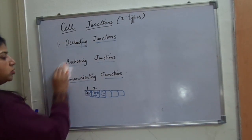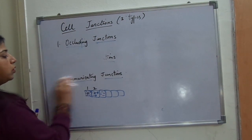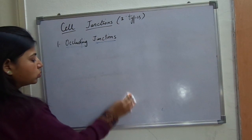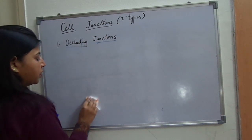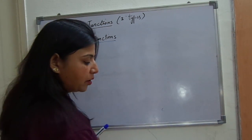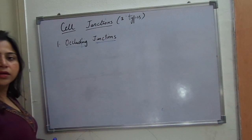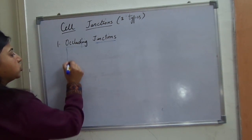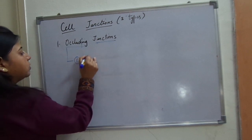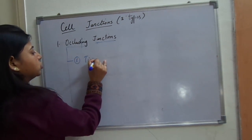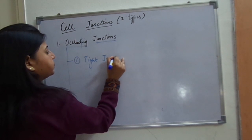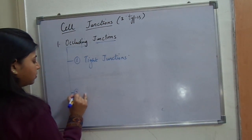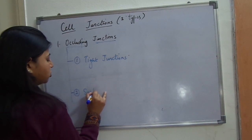Now I will talk about occluding junctions in detail. In occluding junctions, the connection between two cells is stopped up; two cells are not connected to each other. Two types of occluding junctions are there: first one is known as tight junctions, and second one is known as septate junctions.